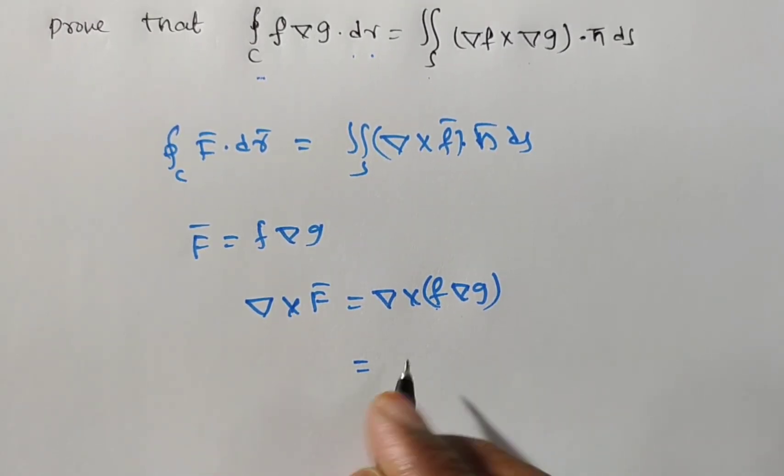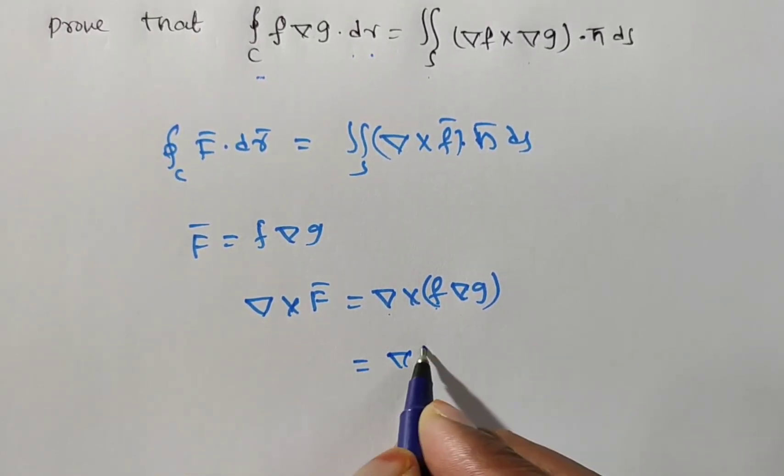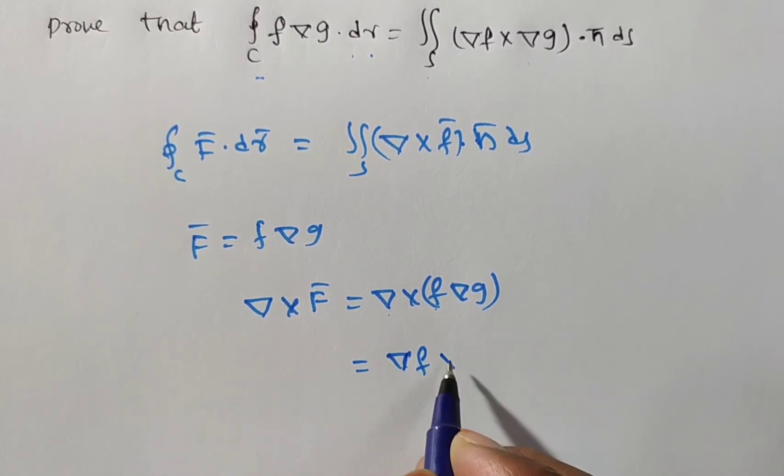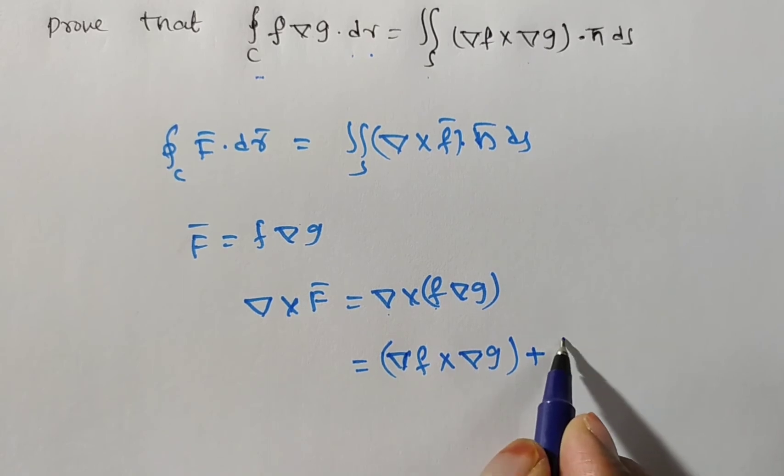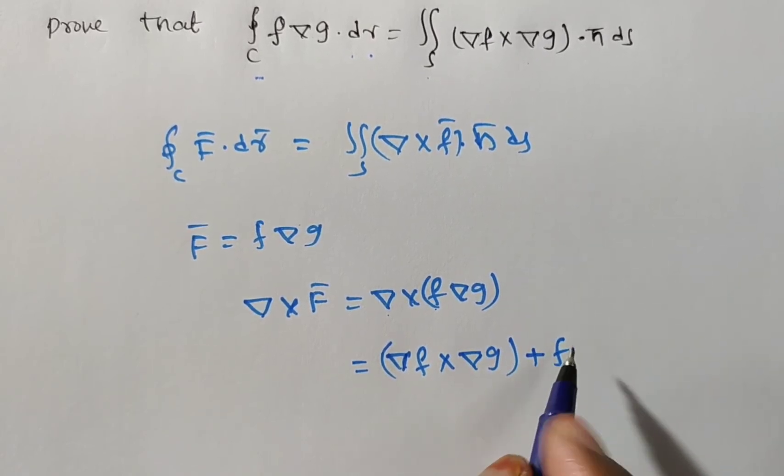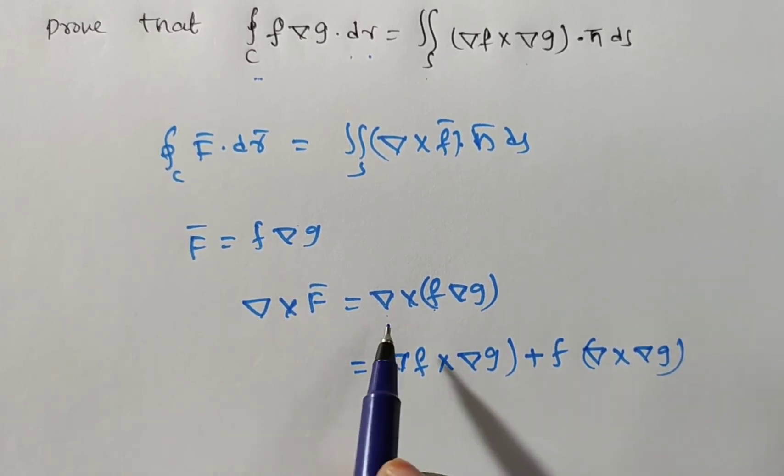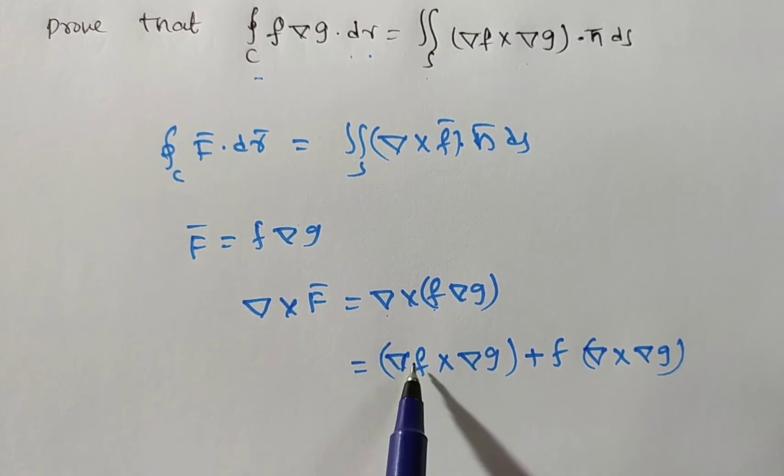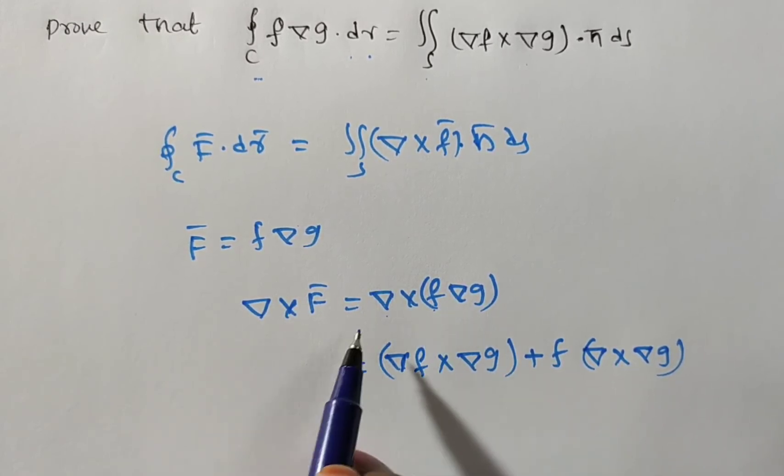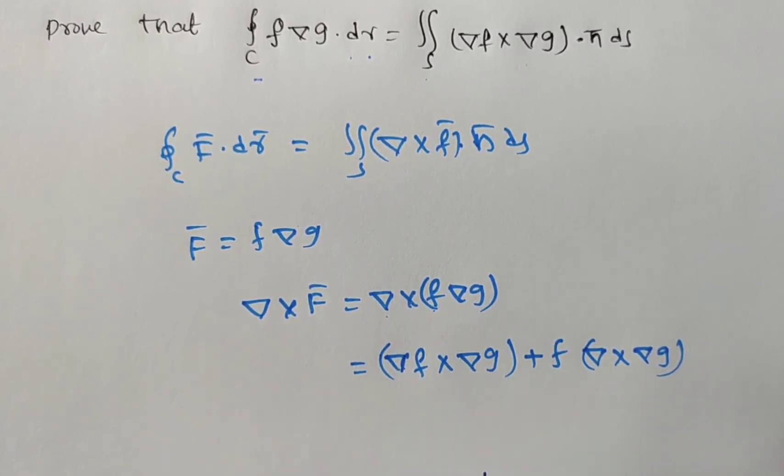In this case you see simple this is del f first. I am applying differential operator on f cross del g. First one is over, plus now f into here, f into del cross del g. I am repeating again, first del f cross del g, next f outside del cross del g. That is it.